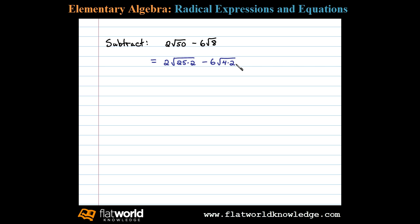Furthermore, the square root of 25 is 5, and we can write 2 times 5 times the square root of 2. Then, 6 times the square root of 4 is 2, giving us 6 times 2 times the square root of 2.